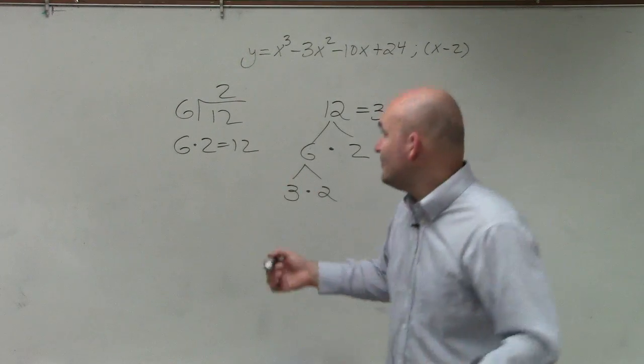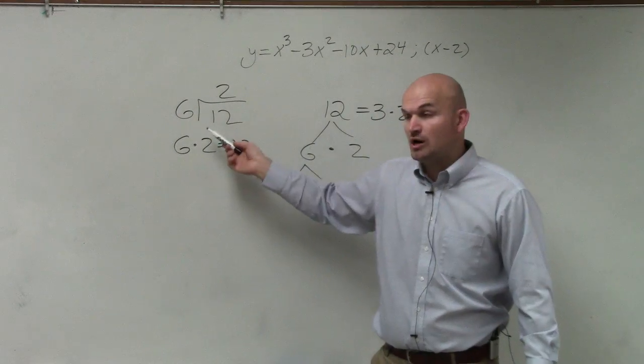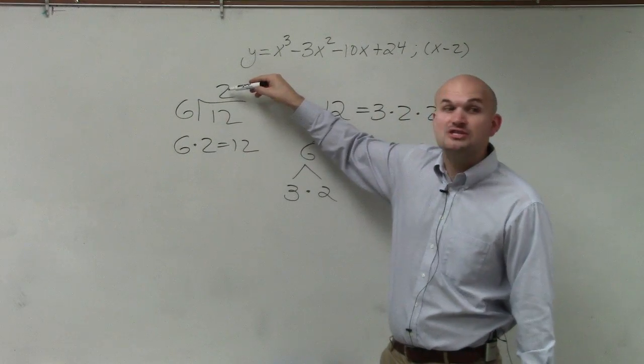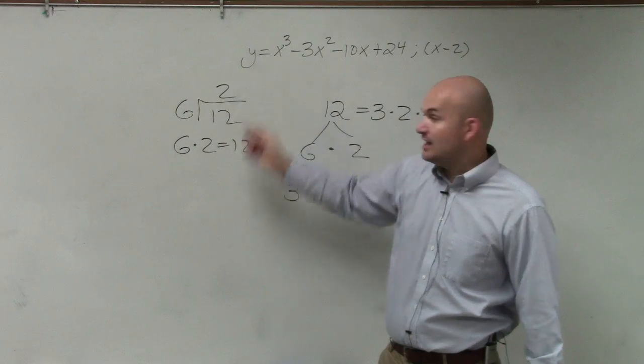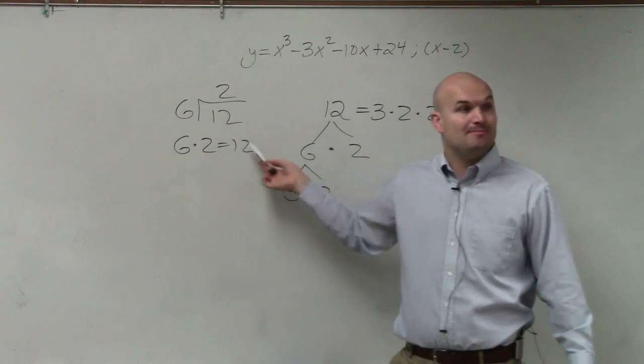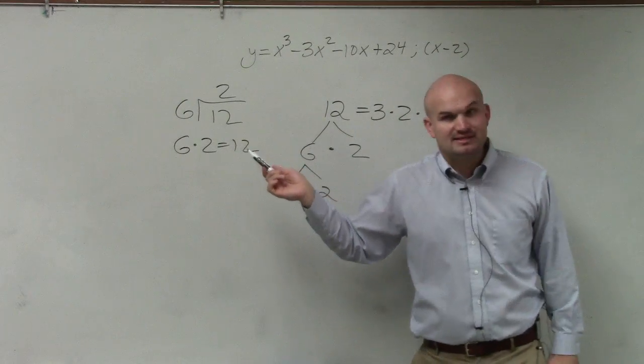So what's important about this, though, is 6 we know is a factor of 12, because 6 divides into 12 two times. Is it OK then to rewrite this as a product? 6 times 2 equals 12, right? So if you have a factor, a number that divides into 12, that quotient is also a factor. And if you multiply your two quotients, you would get back your polynomial. Does it make sense with numbers?